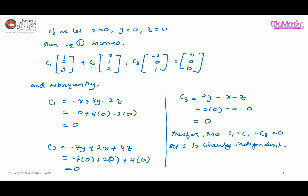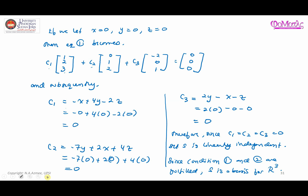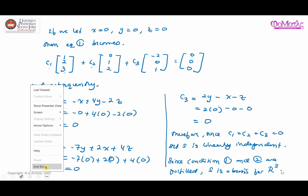In conclusion, since both conditions are fulfilled — S spans R³ and S is linearly independent — we conclude that S is a basis for this vector space. That's all for now; see you in the next video, which is also about another example related to basis for vector space. Thank you for watching.